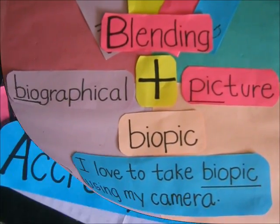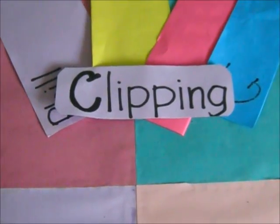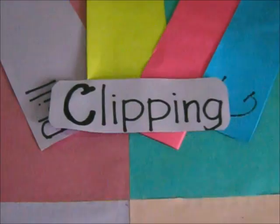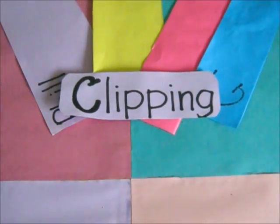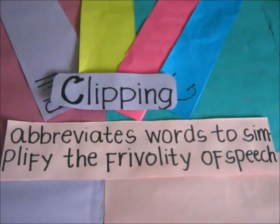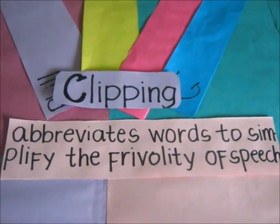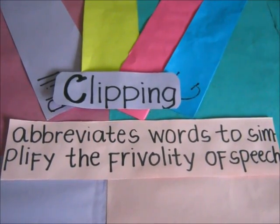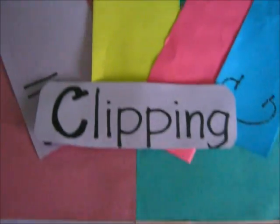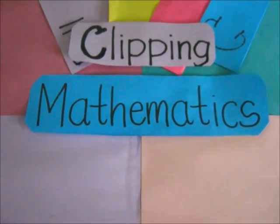The third type of word formation process is clipping. Clipping is the word formation in which a word is reduced or shortened without changing the meaning of the word, also used in abbreviated words to simplify the frivolity of speech. When we say 'frivolity,' it means the lack of seriousness, or something that is unnecessary or silly. Let's have examples of clipping. Let's have the word 'mathematics.' When we clip 'mathematics,' we get the word 'math.'